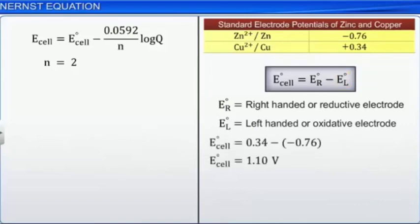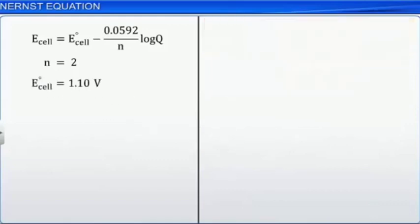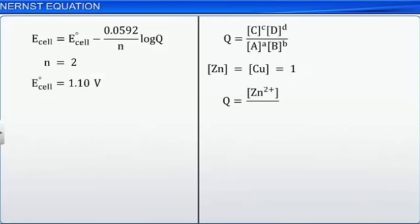Now, work out the expression of Q, the reaction quotient. Since the concentrations of solids are taken as unity, the reaction quotient Q becomes the concentration of zinc 2 ions over the concentration of copper 2 ions.